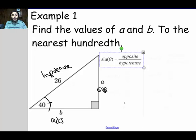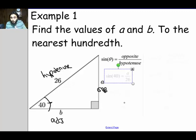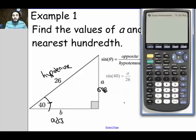So I write the formula down. The sine of theta is equal to opposite over hypotenuse. I have to substitute for theta, opposite, and hypotenuse. Theta is the angle, opposite is A, and the hypotenuse is 26. So when I substitute, I will get the sine of 40 degrees is equal to A over 26. Now the sine of 40 degrees, that's something we can get by using our handy dandy calculator.